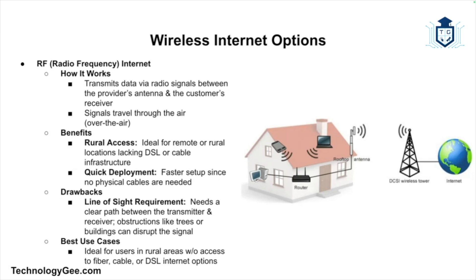RF internet offers quick deployment — because no cables need to be laid, it can be set up faster than wired services. Some drawbacks include line-of-sight requirements: the RF signal often requires a clear line of sight between the receiver and the transmitter tower, meaning trees, buildings, or other obstructions can disrupt the signal. It is also sensitive to weather conditions like rain or storms. RF is best for rural users without access to fiber, cable, or DSL.